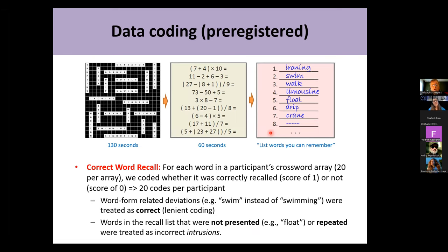We also preregistered how we code our data. For the two dependent variables — correct word recall and retrieval rank — we coded for each of the 20 words in a participant's crossword array whether it was correctly recalled, giving a score of one, or not, a score of zero. We were quite lenient: word-form-related deviations from the original presentation — for instance, the participant said 'swim' although it was presented as 'swimming' — were treated as correct recall. But words not presented, like 'float', even if semantically related, were treated as incorrect intrusions.